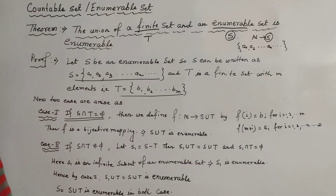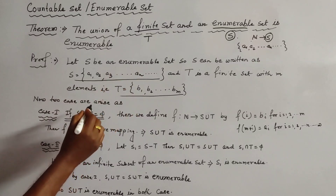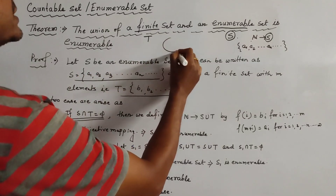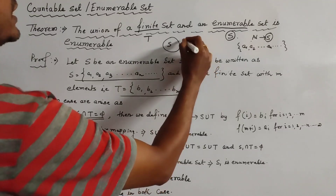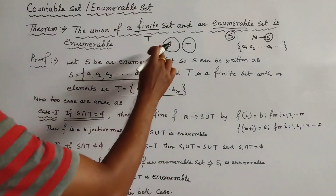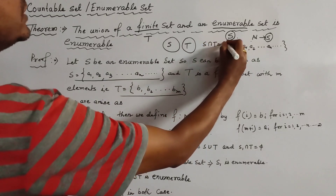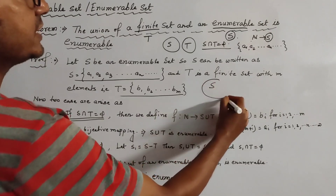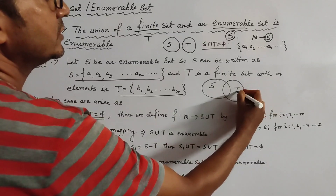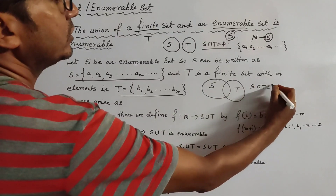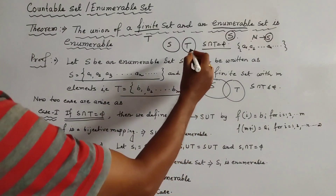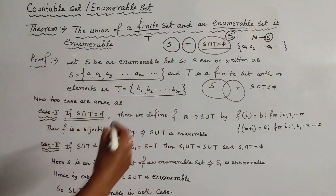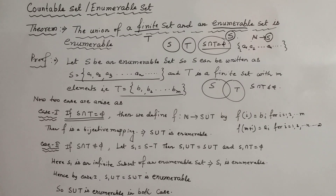Now two cases may arise. Case one: S and T are disjoint, meaning S ∩ T = ∅. Case two: S and T overlap, meaning S ∩ T ≠ ∅. We first discuss Case 1, where S ∩ T = ∅.